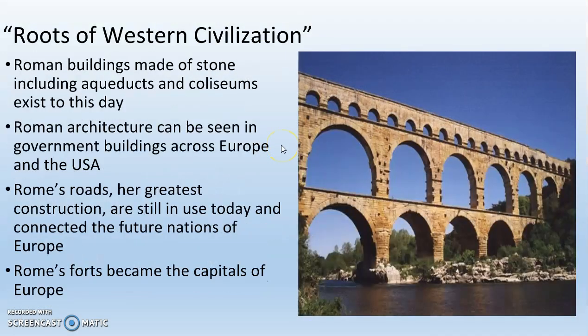In architecture, many Roman buildings were made of stone — including the aqueducts and the Colosseum — and exist to this day. Roman architecture featuring white buildings with columns, like the White House and the Supreme Court building, is based on Roman design. Rome's roads were her greatest constructions and are still in use today by European countries, having been paved over many times. Rome's forts became the capitals of Europe — Paris, London, and Madrid were all major forts created by the Romans before becoming European capitals.